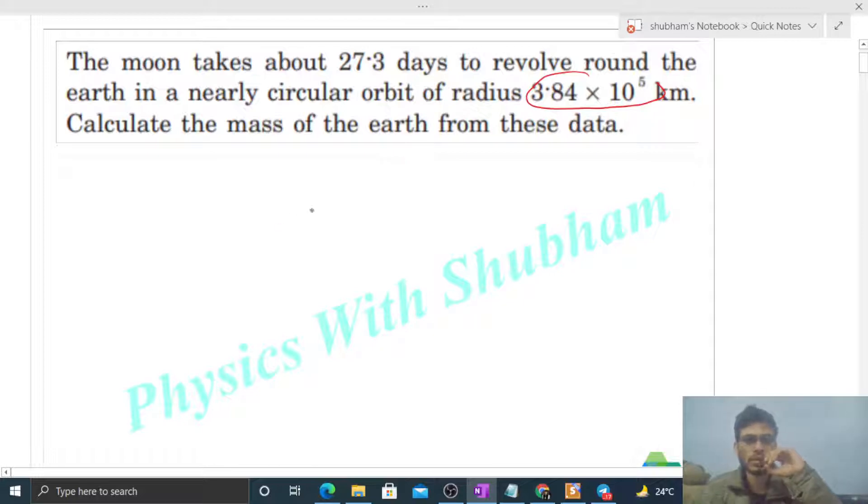So the question is the earth and moon... the moon moves around the earth. Let's say radius is capital R, that is also given. Mass of earth is capital M and mass of the moon is small m.